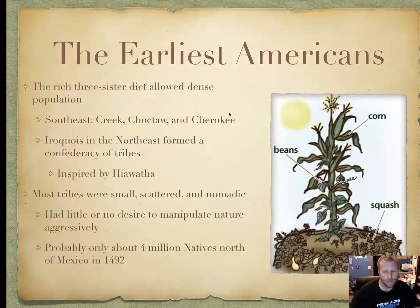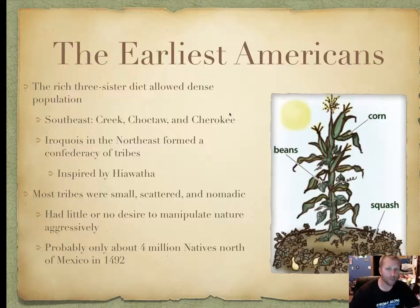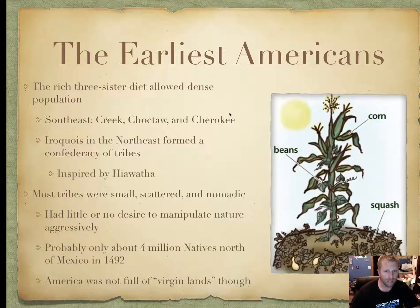There were probably about 4 million natives north of Mexico in 1492. So of that 54 million total, 50 million lived outside of the United States and Canada — 4 million, about 1 million less than the population of Colorado today. It was not full of virgin lands. It wasn't the Garden of Eden; it was manipulated and used by the natives. They burned forests to drive out game. It wasn't untouched like many Europeans have written.